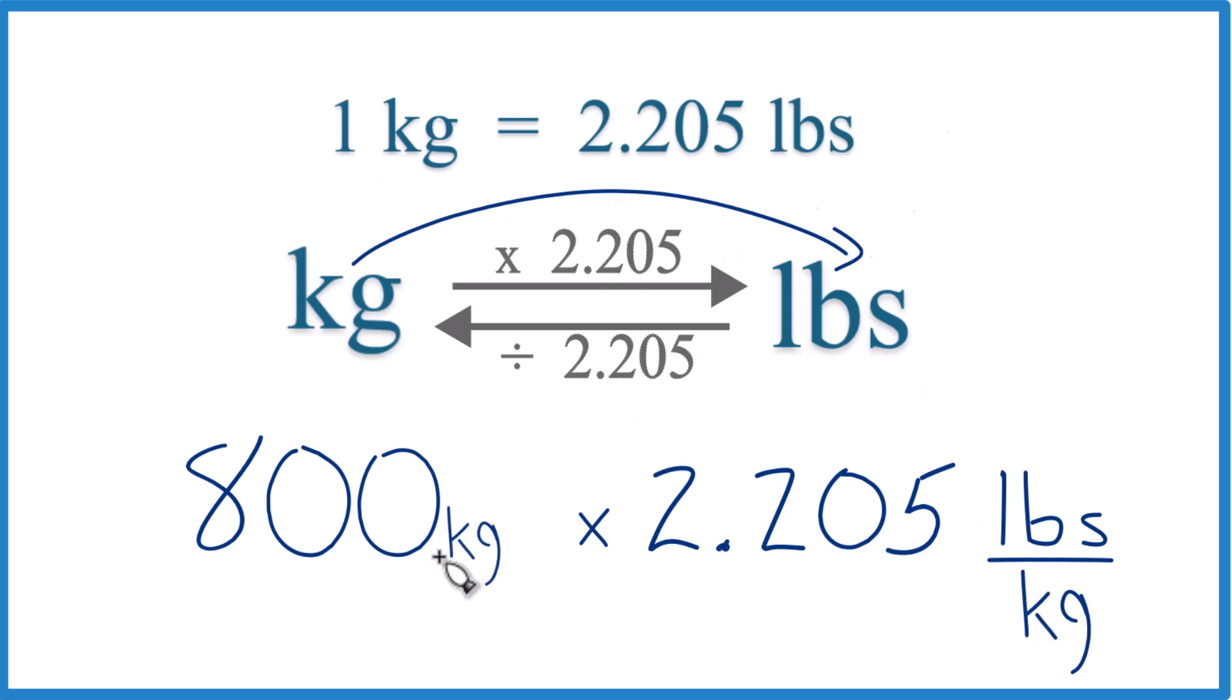Because when we multiply, we have kilograms on the top and the bottom. They cancel out, so we're left with pounds.